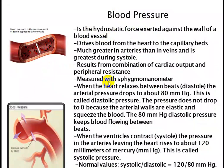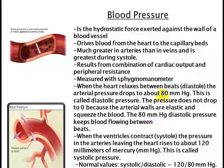Blood pressure is measured by a sphygmomanometer, which is a device used with a stethoscope to measure blood pressure. When the heart relaxes between beats — called diastole — the arterial pressure drops to about 80 mmHg, which is called diastolic pressure. The pressure does not drop to zero because the arterial walls are elastic and squeeze the blood, keeping blood flowing between beats.